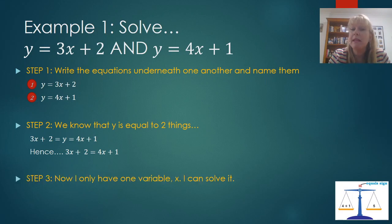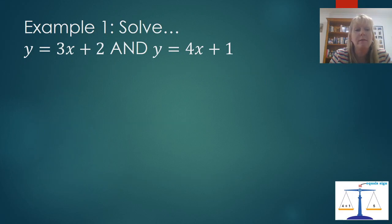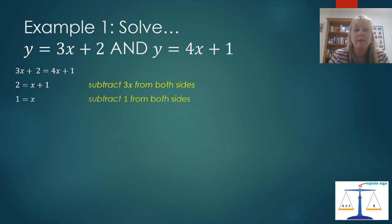My third step is now I've only got one variable, x. I can solve it. So let's do that. 3x plus 2 equals 4x plus 1. If I subtract 3x from both sides, I'm left with 2 equals x plus 1. Now, if I subtract 1 from both sides, I'm going to be left with x equals 1. So now I've solved half of the problem.